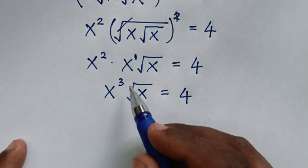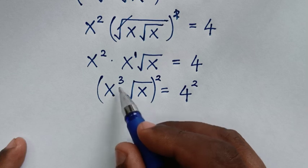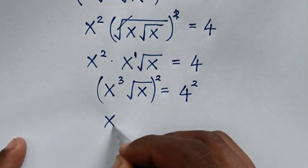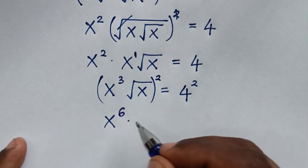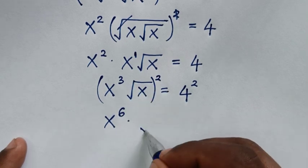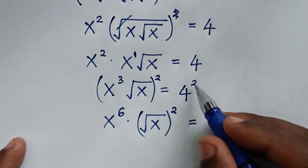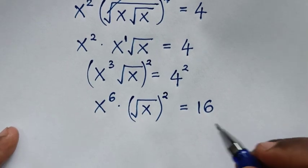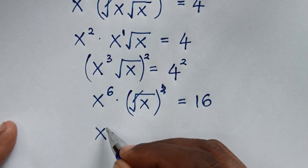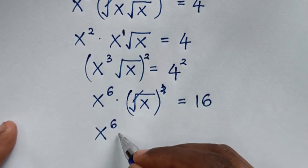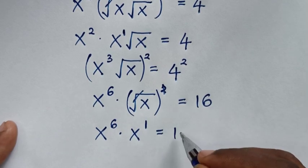Then in the next step, to remove this square root we will square both sides again. So it will be x power of 3 times power of 2, which is x power of 6, then times square root of x squared, which gives x power of 6 times x power of 1, is equal to 4 squared which is 16.